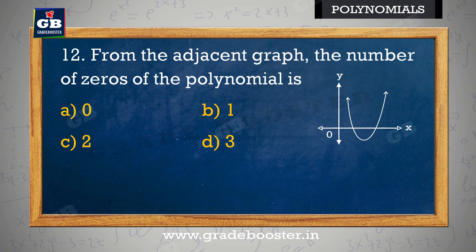From the adjacent graph, the number of zeros of the polynomial is: asan graph se polynomial ke zero ki sankhya hai — a) 0, b) 1, c) 2, d) 3.